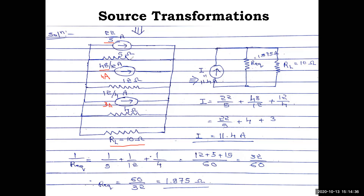Now there are three current sources in parallel. From the property of parallel connection, we can add the three currents: 22/5 + 48/12 + 12/4 = 4.4 + 4 + 3 = 11.4 amps. This network now reduces to a single current source of 11.4 amps.